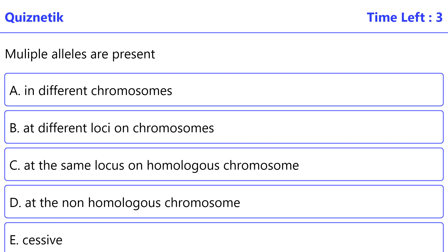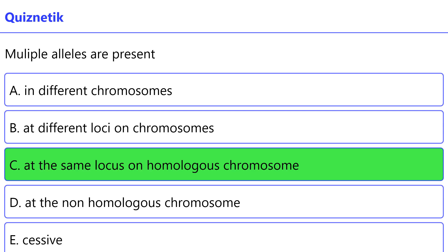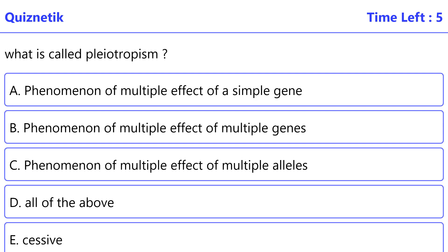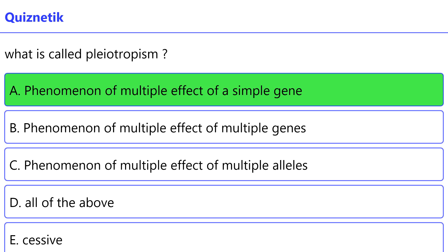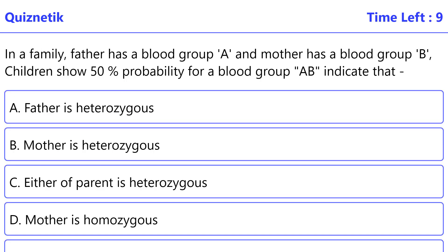Multiple alleles are present at the same locus on homologous chromosomes. What is called pleiotropy? The correct option is A: the phenomenon of multiple effects of a single gene.